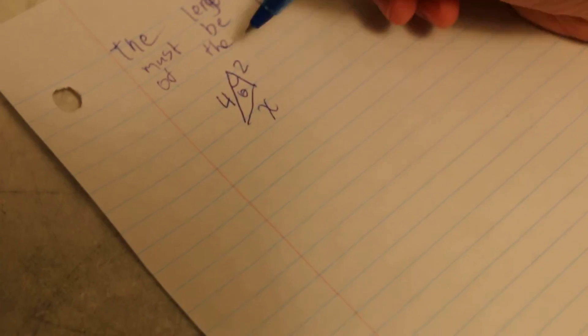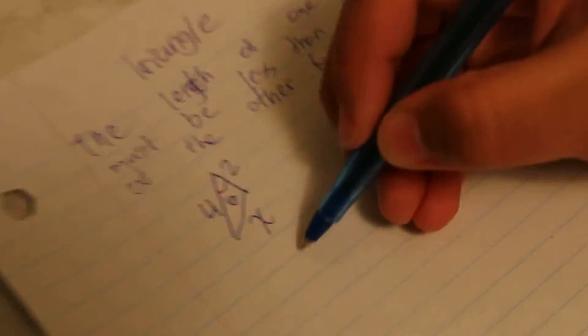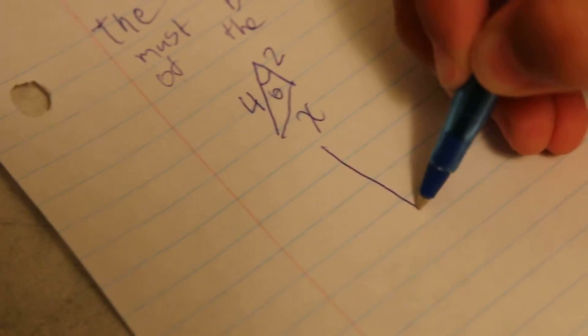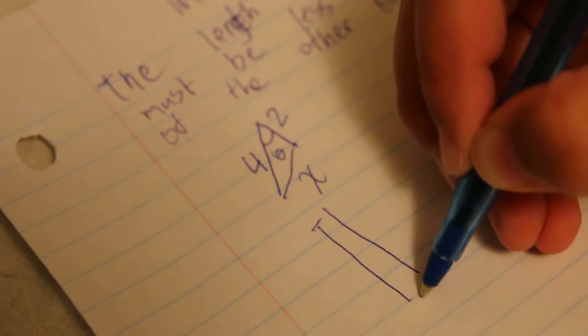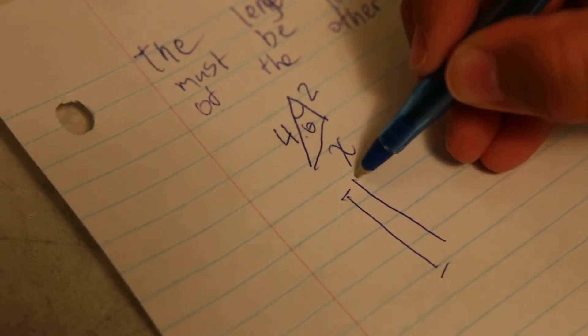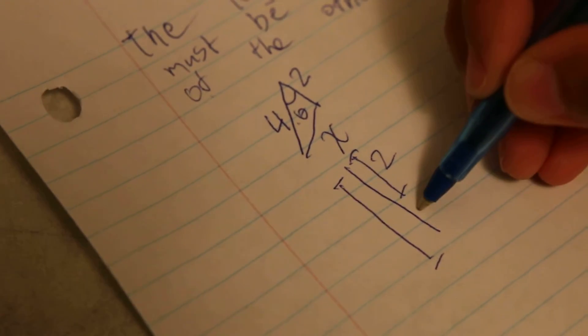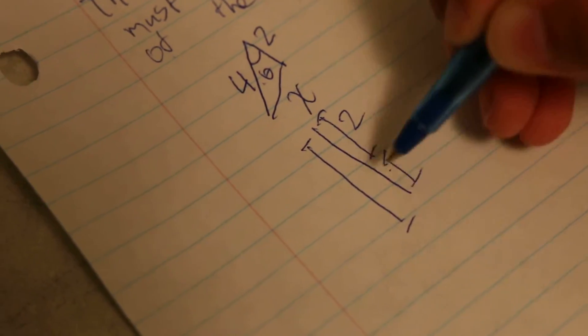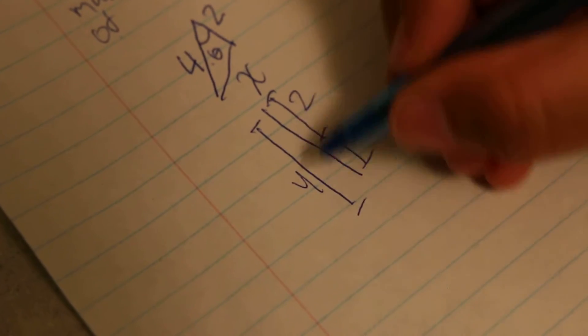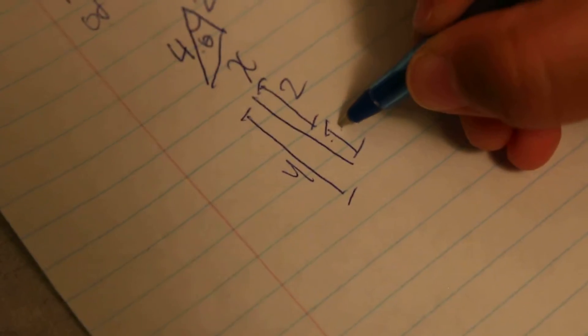So if theta is zero, then this will be a degenerate triangle, and this will have length 4, that side, this side has length 2, so this means that x has length 4 minus 2, so 2.